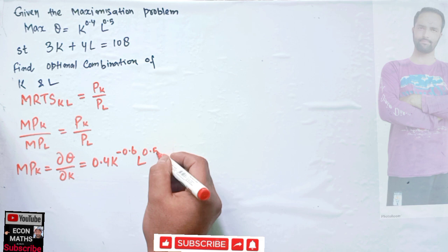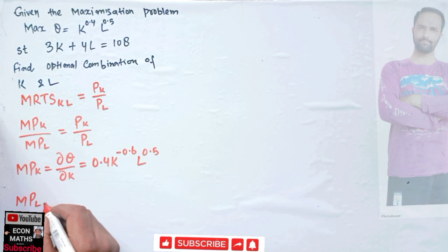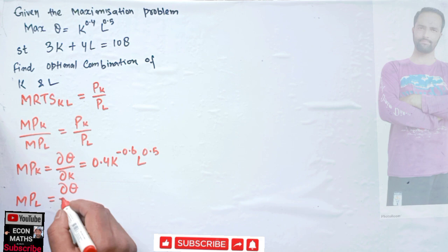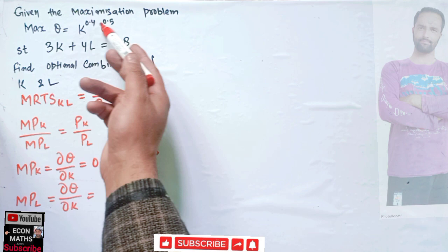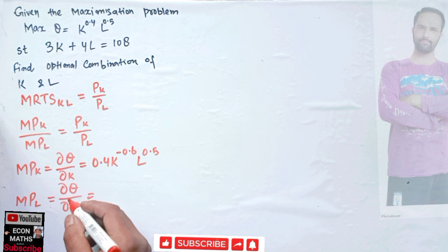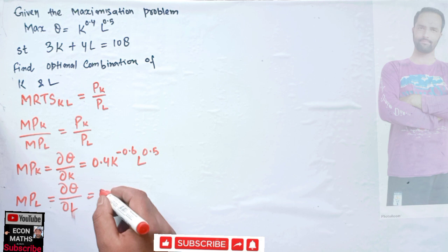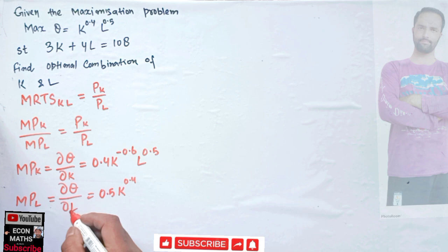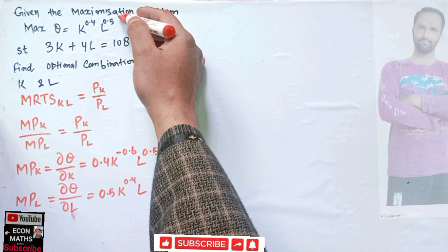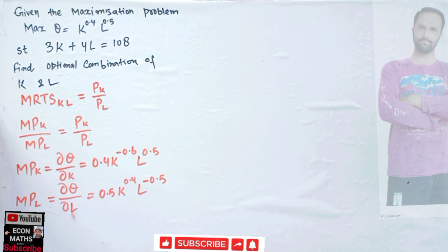Similarly, the marginal product of labor (MPL) is the partial derivative of the production function with respect to l. Differentiating with respect to l: 0.5 becomes the coefficient, k^0.4 remains unchanged, and the exponent on l becomes 0.5 - 1 = -0.5. So MPL = 0.5 * k^0.4 * l^(-0.5).